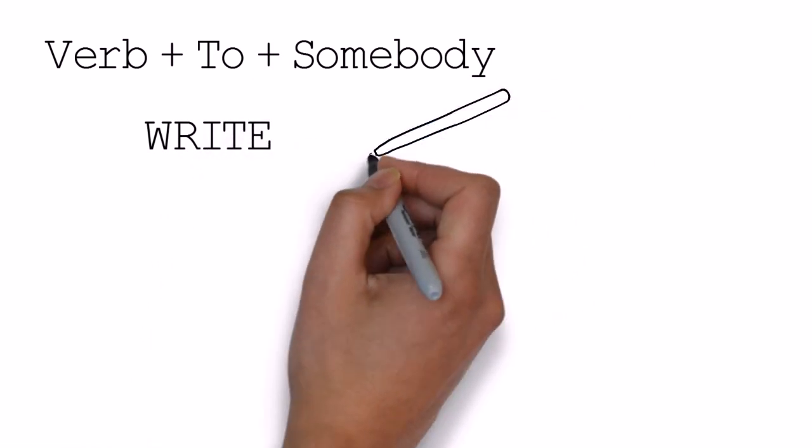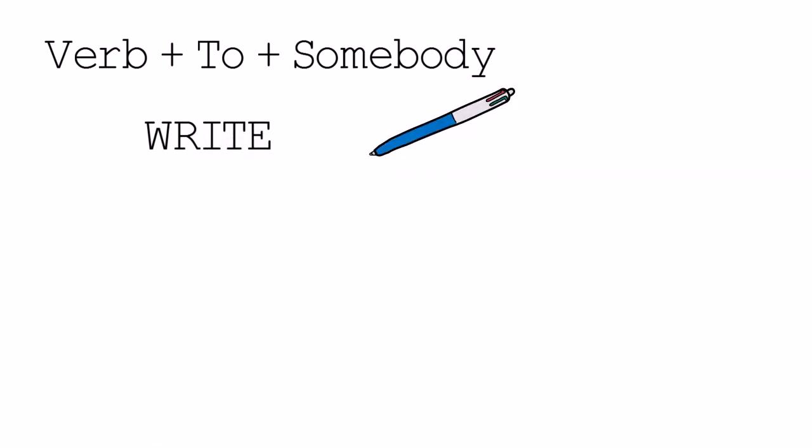The first one is write. Write to somebody - write to your friend, write to your mother, write to your father. Very important construction. The to is often omitted.